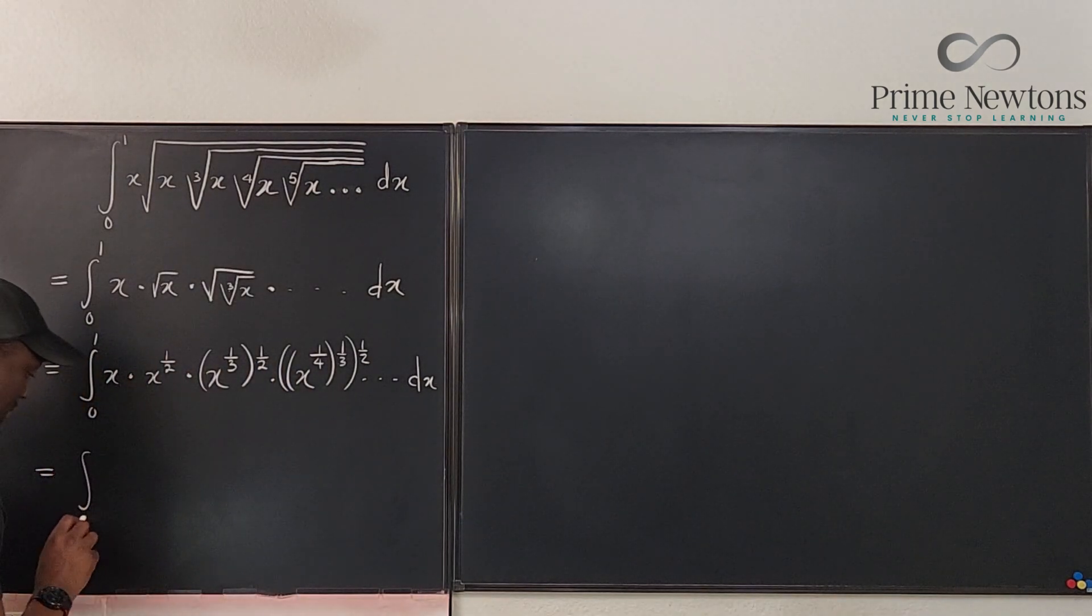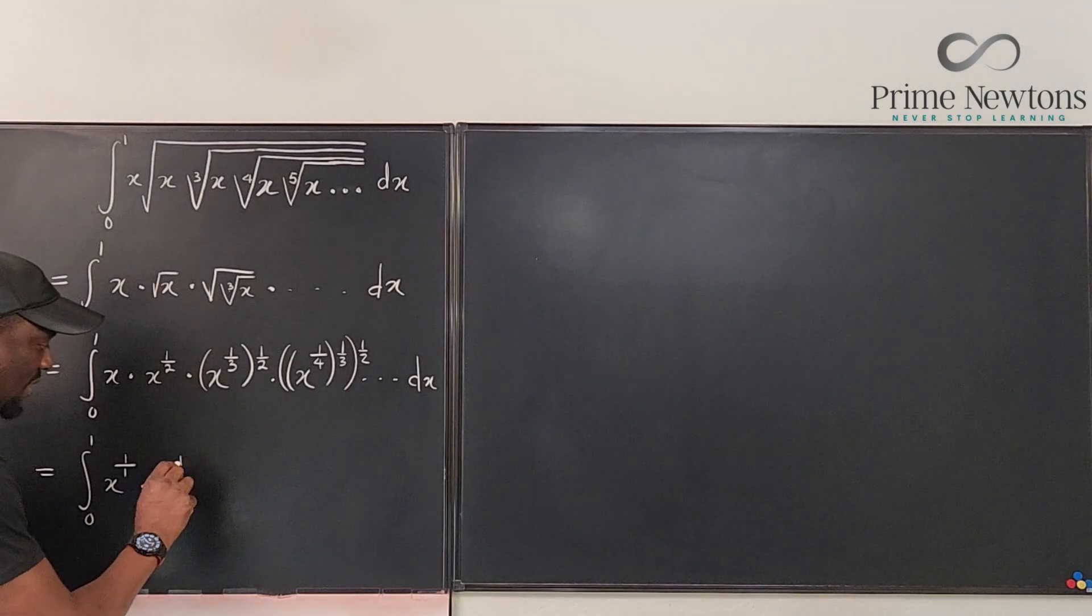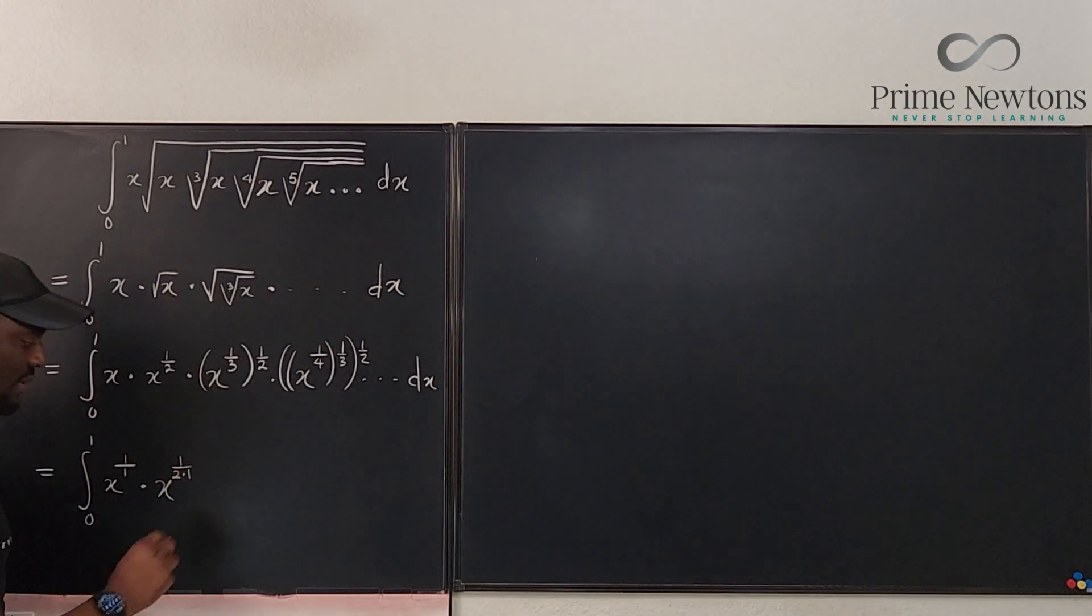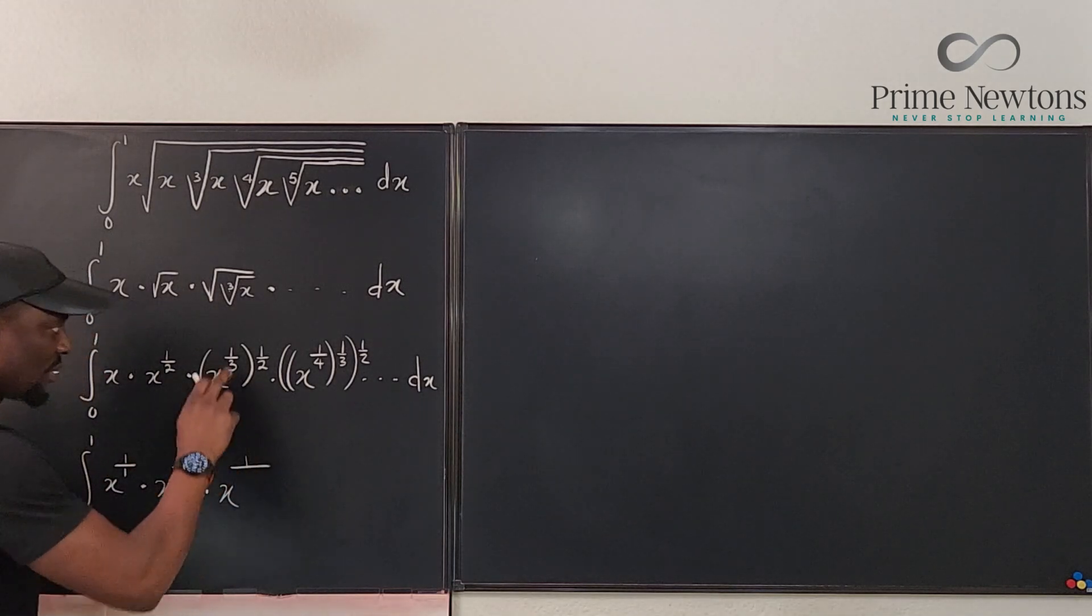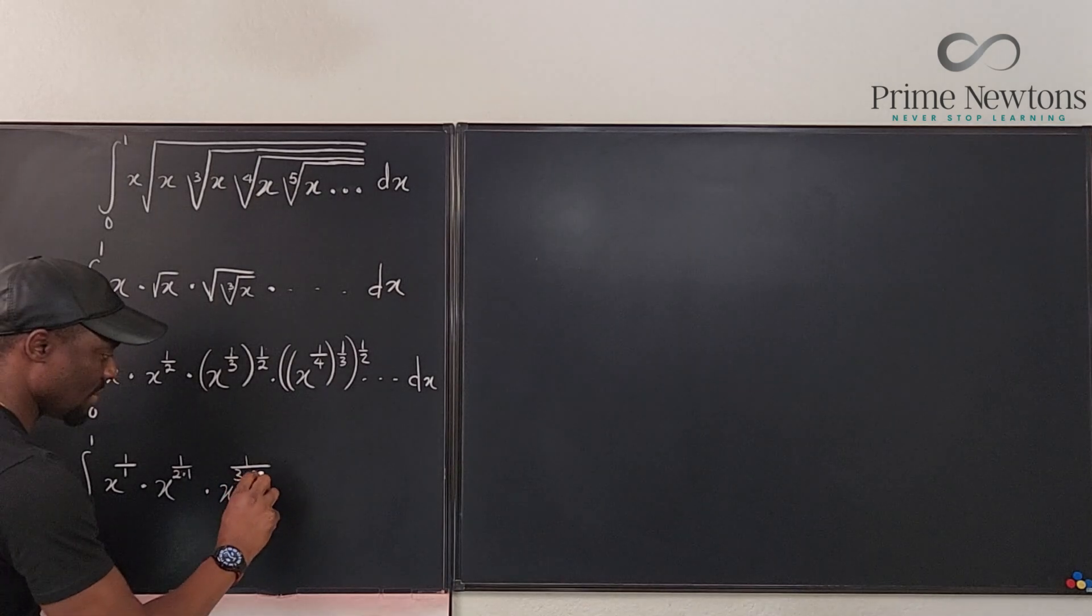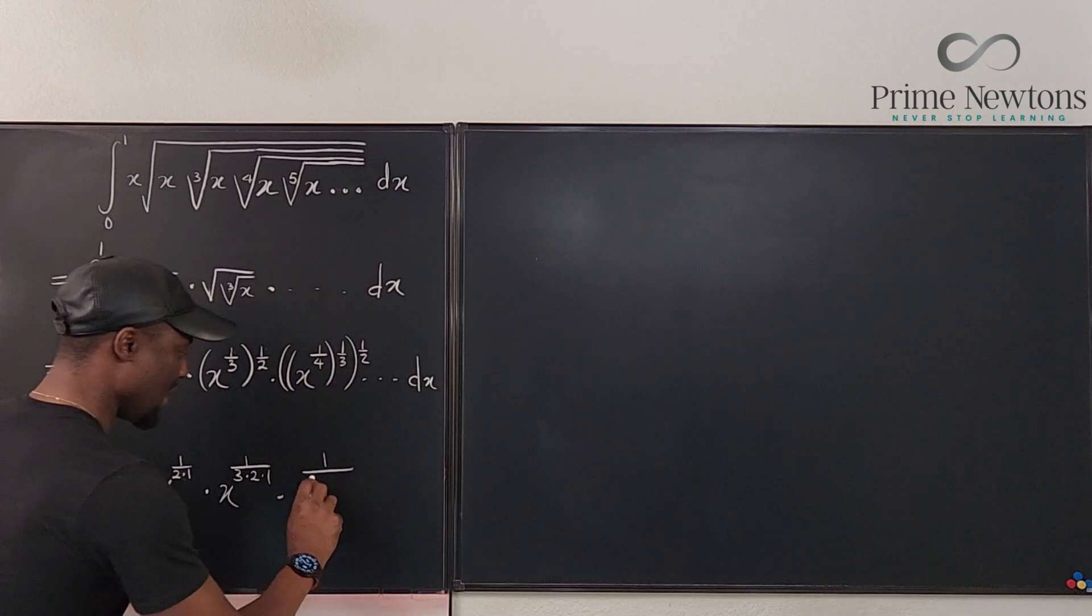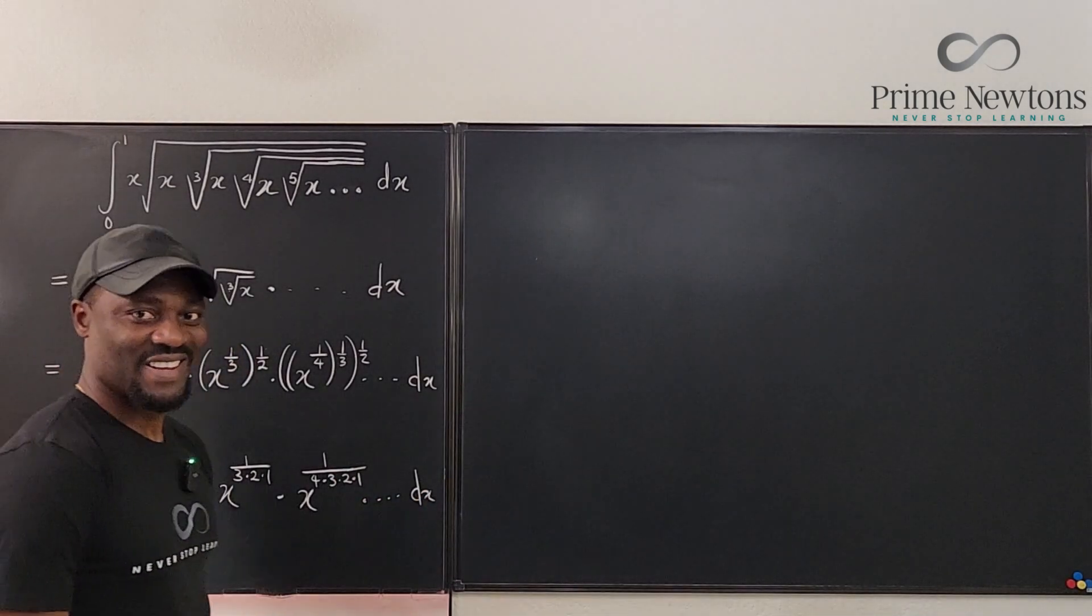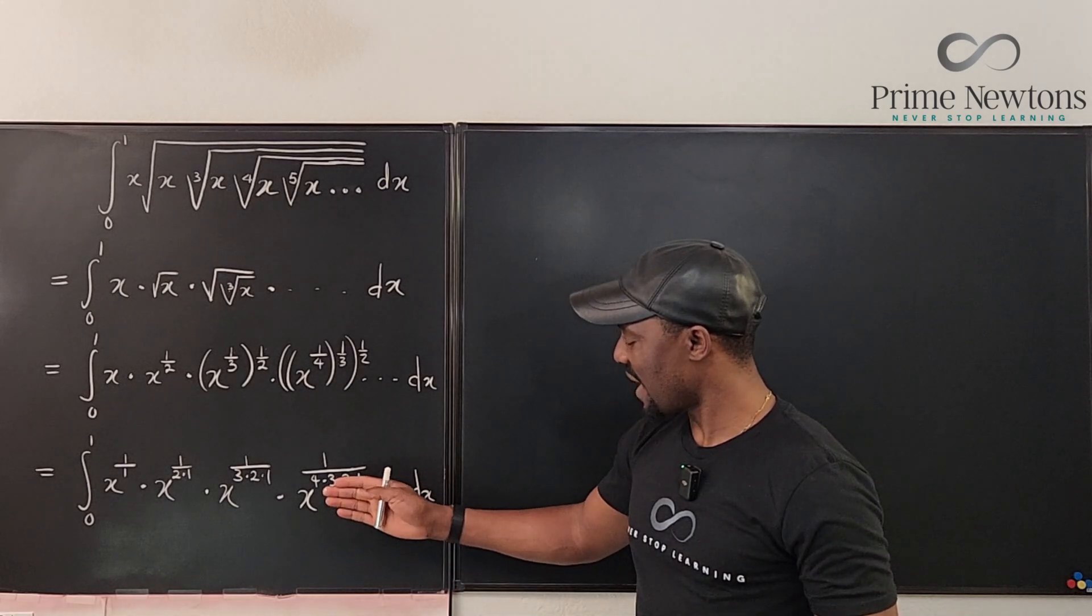This is equal to the integral from zero to one of x raised to power, watch this. One over one times two, or let's say two times one. Let's make it two times one times x raised to power. This is going to be three times two times one. The bottom is going to be three times two times one. X to the one over four times three times two times one. Now you see where we're going. So it looks like everything is a factorial expression.